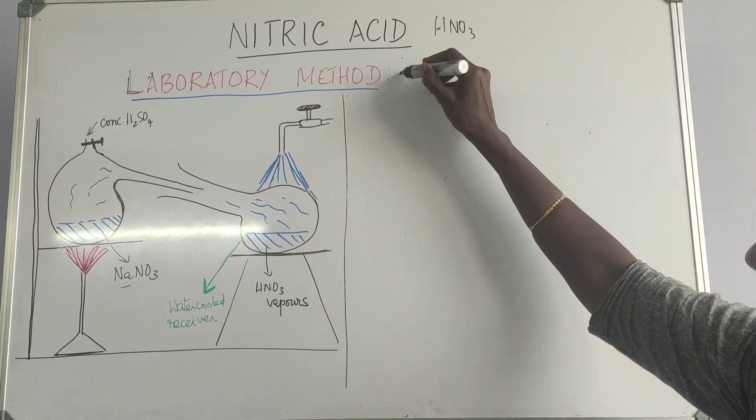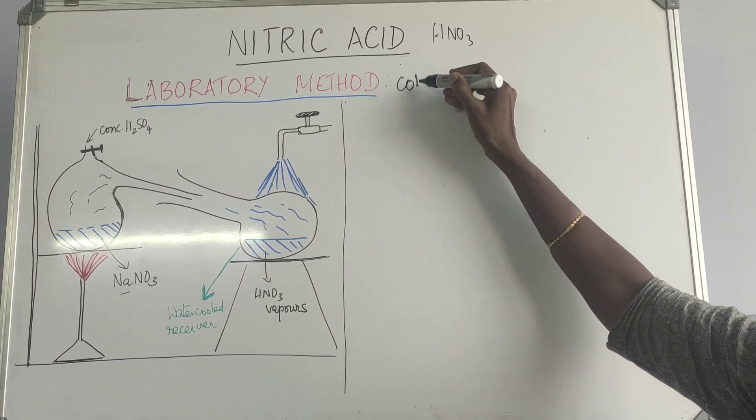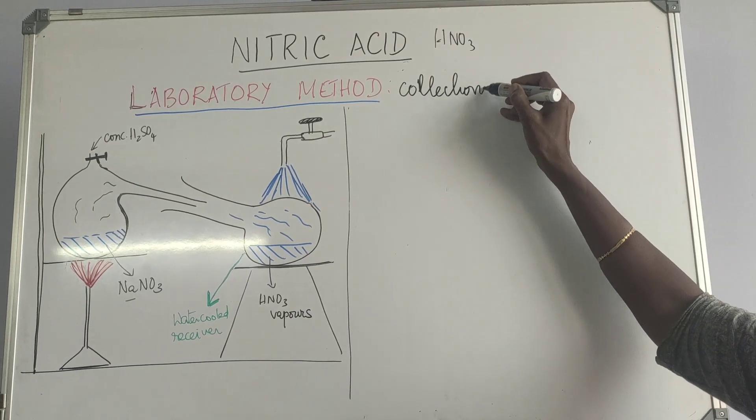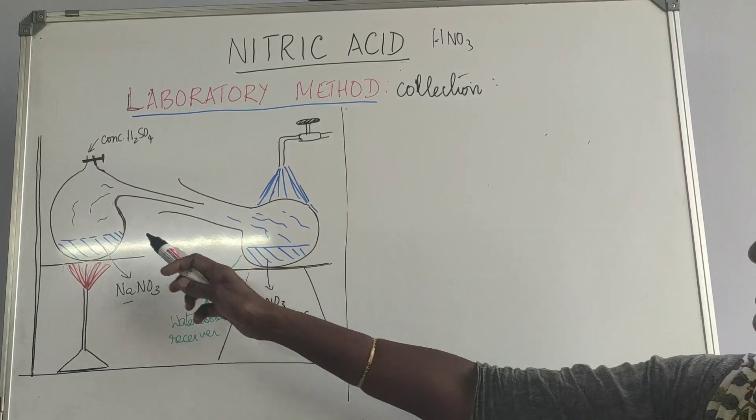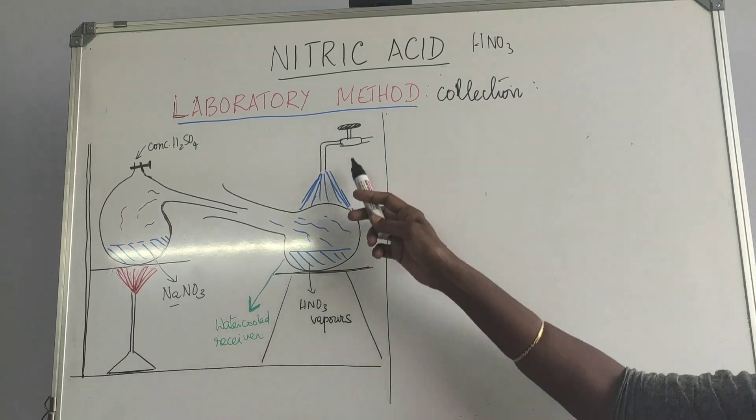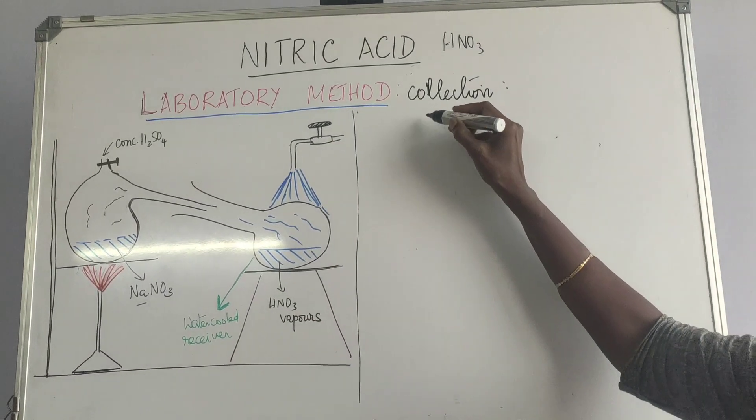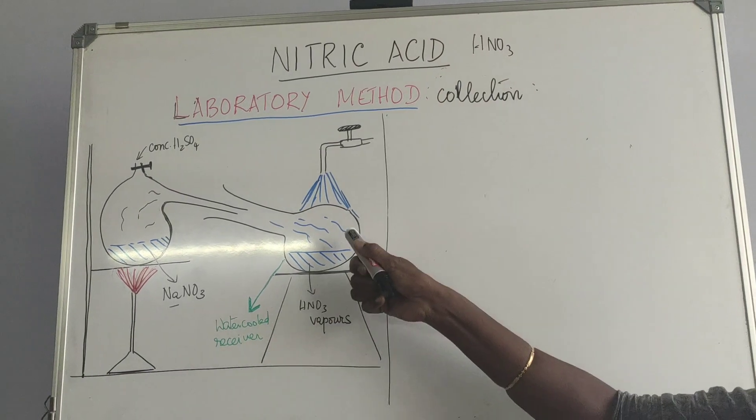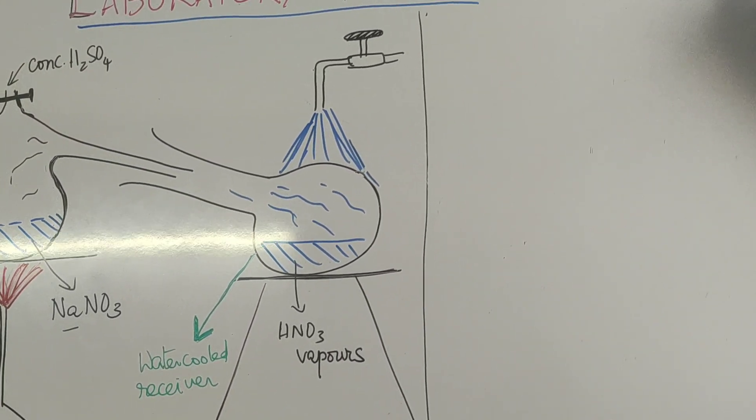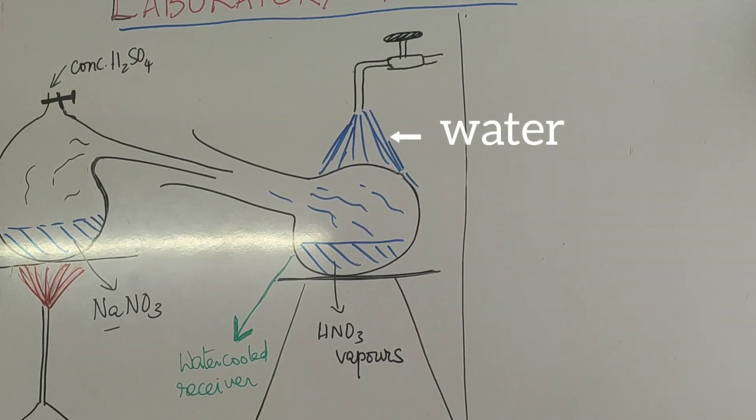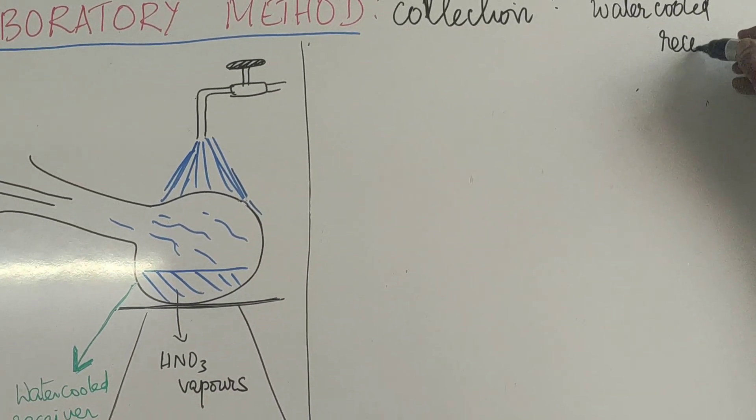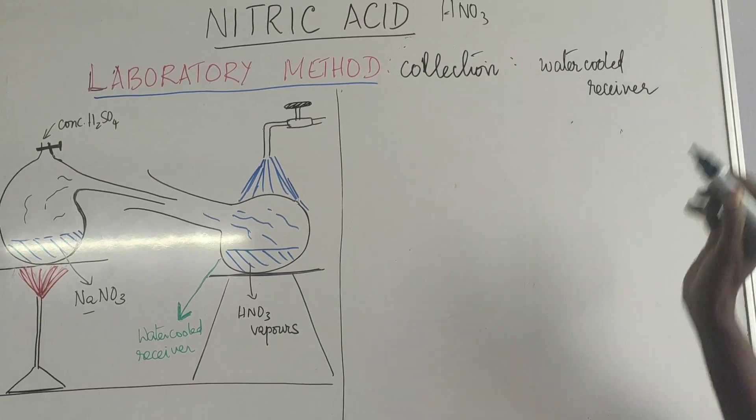Next we move on to the collection. Actually nitric acid is in a vapor state. It comes here. And it is collected in a water cooled receiver. Then it condenses as nitric acid. So it's collected in a water cooled receiver. That's about collection.